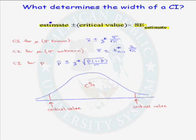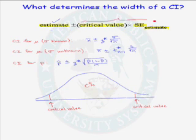First, let's take a look at our estimate. Can we do anything about our estimate? We draw a sample from our population and get an estimate for our population parameter. We can't do anything about our estimate. The estimate is the center of our confidence interval and does not control the width. The width is determined by our margin of error.